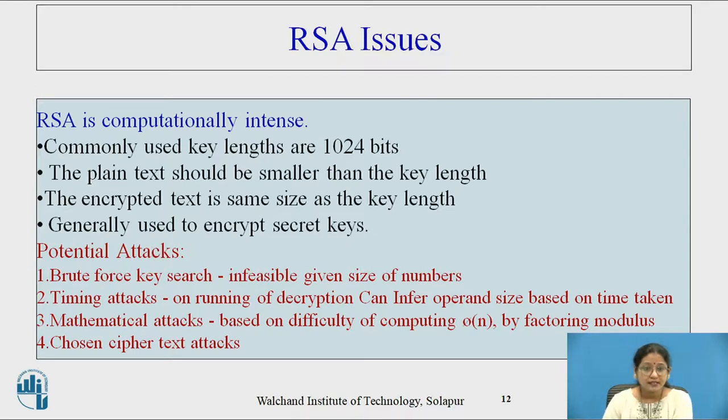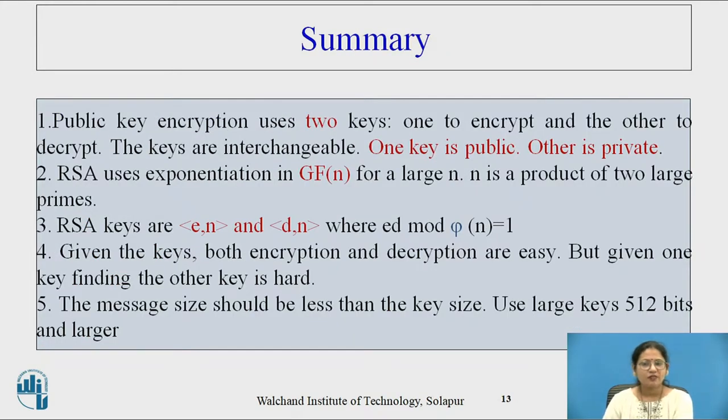So these four types of attacks are possible: brute force key search, timing attacks, mathematical attacks, and chosen ciphertext attacks. Now summarize within a couple of minutes what we have seen for RSA encryption, decryption algorithm, and key generation.